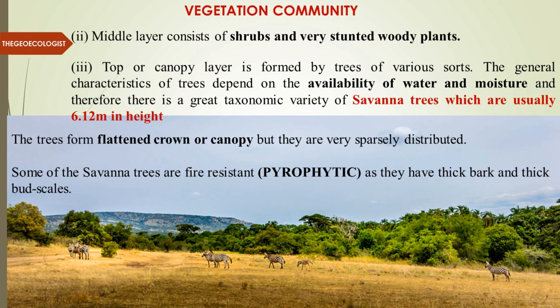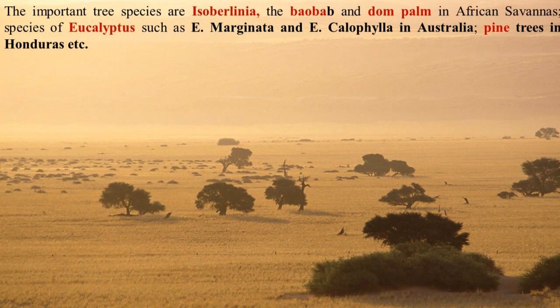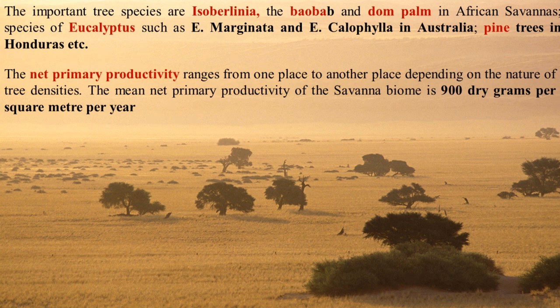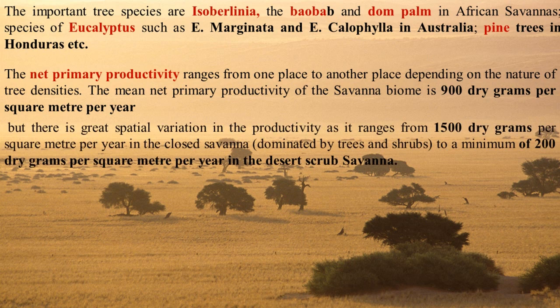Fire-resistant plants in the Savannah are called pyrophytic — they have thick bark and thick bud scales. Important tree species include Isoberlinia, Baobab, Doum palm, Eucalyptus in Australia specifically, and some pine trees in Honduras. The net primary productivity averages 900 dry grams per square meter per year, but varies from 1500 dry grams on the equatorial side to a minimum of 200 dry grams on the 20-degree side, depending on the climatic zone.